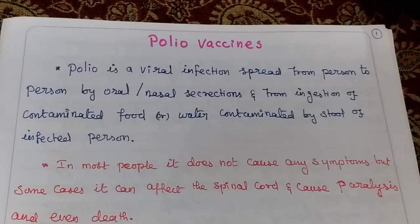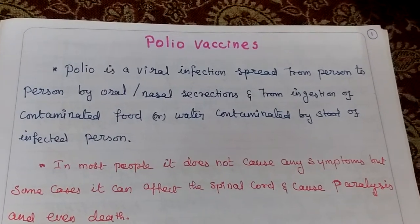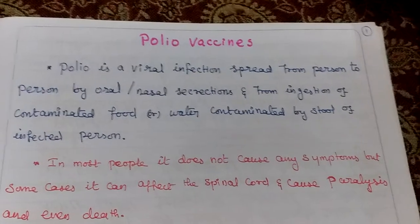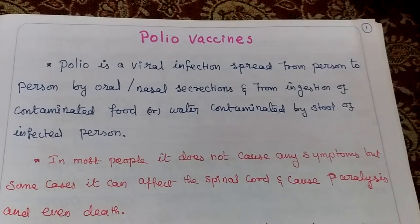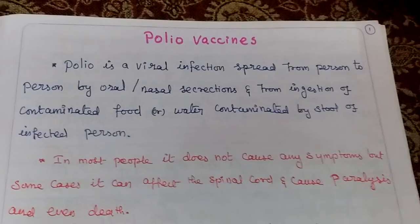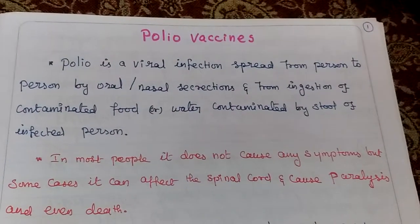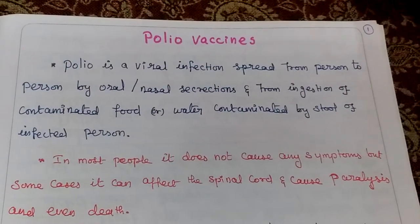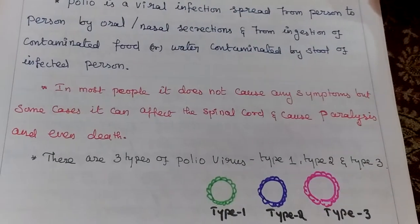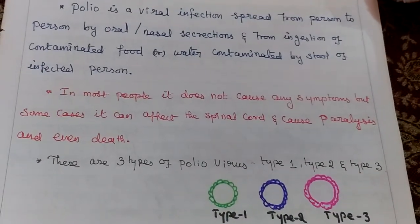Polio vaccines. Polio is a viral infection spread from one person to another by oral or nasal secretion and from ingestion of contaminated food and water by stool of infected persons. In most people, it does not cause any symptoms — an asymptomatic condition only.